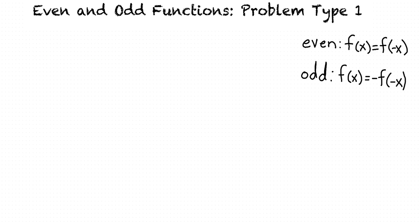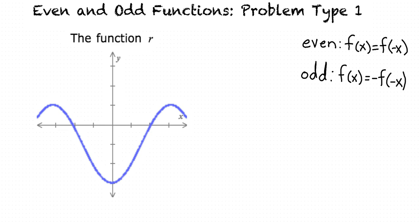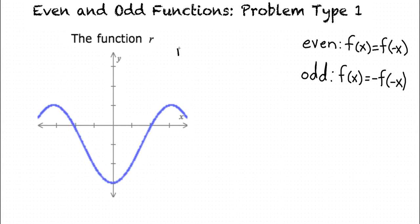What if we have a graph? How can we tell if a function is even or odd from the graph? We can use the same test that we used before for a graph. For example, let's check if this function r is even or odd. First, let's see if it's even.